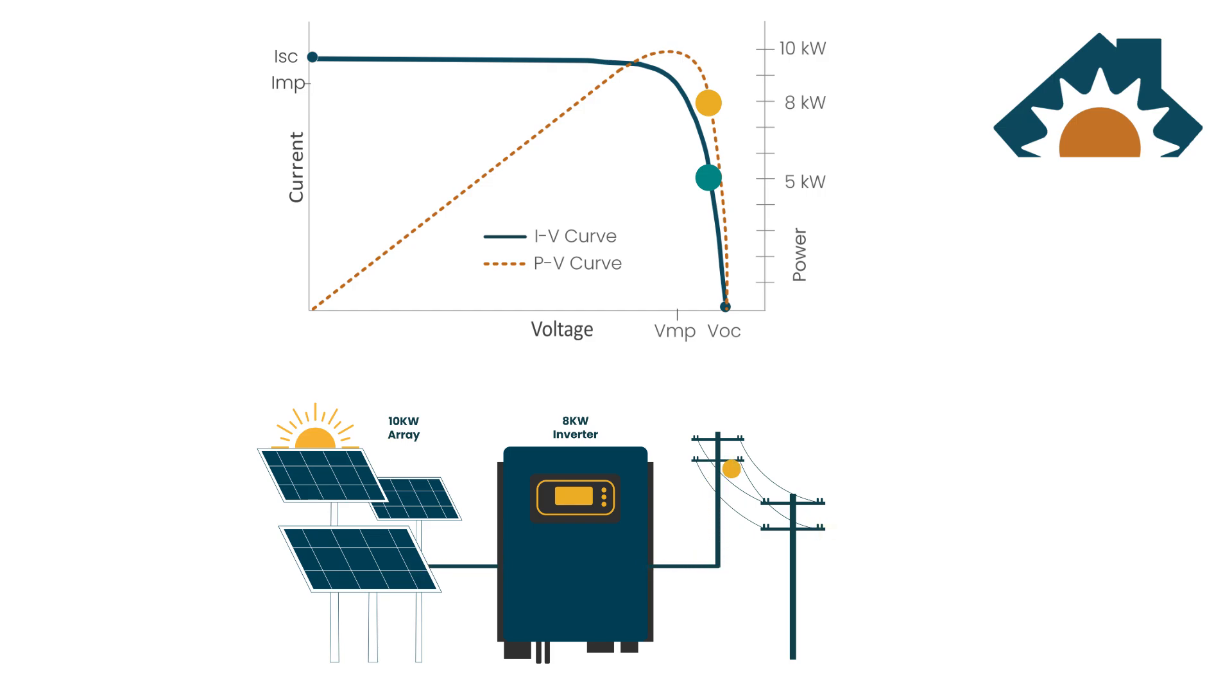Some inverters have the capability to derate its power output. So let's say you derate the inverter to an output of 5 kilowatts. Well, then the inverter can again manipulate the array voltage until it meets its power target.